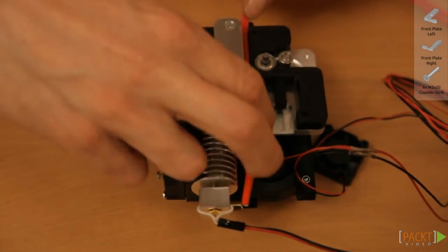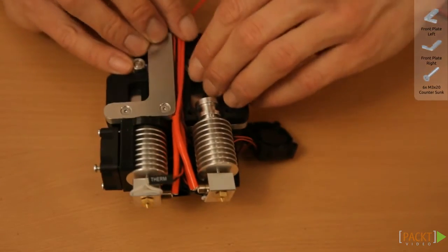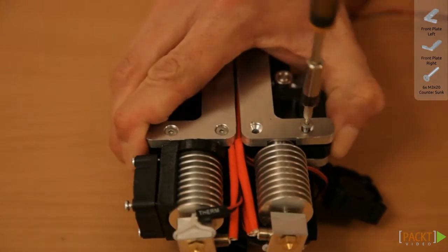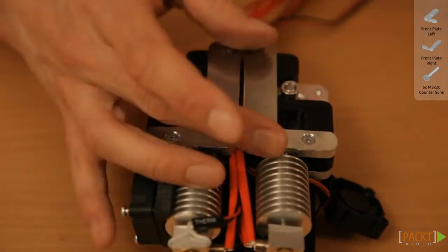Lead the cables through the channel in the middle. Mount the right front plate. You'll also do this even if you only have a single extruder. Be careful that no wires get stuck in between.